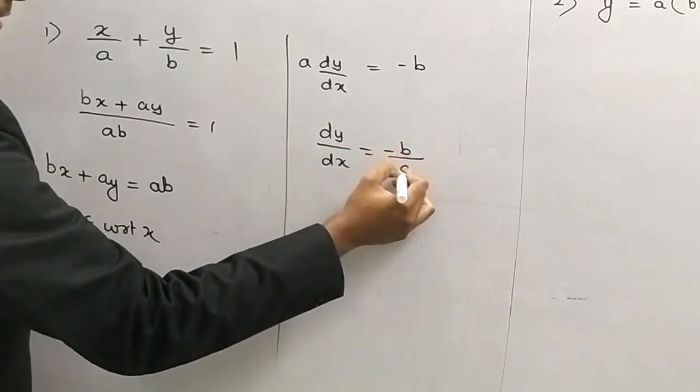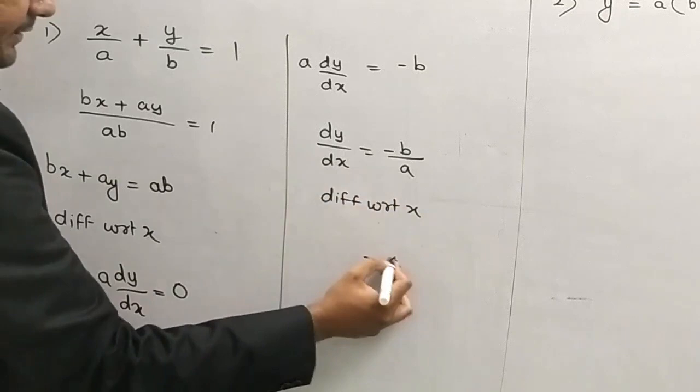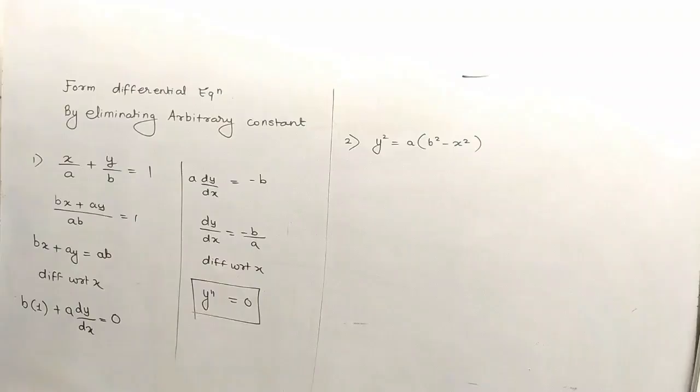Again differentiate with respect to x. Is taraf yeh mar gaya, yahaega y''. So this is our desired solution. Isi tarike se karna hai — whenever you kill the constant, that is the arbitrary constant, you are able to find the differential equation. Please have a note of it.